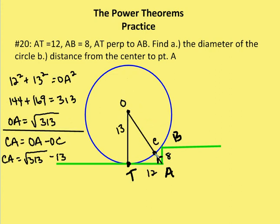Now I can find the distance from the circle to point A. Since the radius OT is perpendicular to the tangent AT, I use the Pythagorean theorem with legs 12 and 13. OA equals the square root of 12 squared plus 13 squared — that's the square root of 144 plus 169, or the square root of 313. The distance CA from the circle to A is the square root of 313 minus 13.